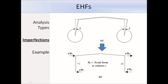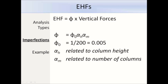Here is how we calculate the equivalent horizontal forces. They are equal to the sway imperfection phi times the vertical forces. Phi is equal to phi-nought times alpha_h times alpha_m. The Eurocode states that phi-nought is 1 in 200, which is equivalent to half a percent — the same as we would have used in BS 5950. The next slide will tell you how to get these alpha factors.